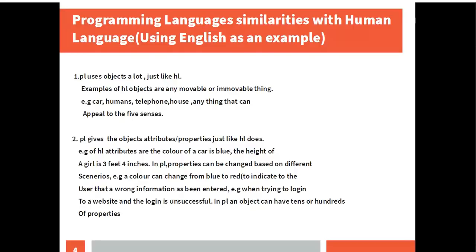car, humans, telephone, house — anything that can appeal to the five senses. The second point is that PL gives objects attributes or properties, just like HL does. Examples of HL attributes are: the color of a car is blue, the height of a girl is three feet four inches. In PL, properties can be changed based on different scenarios, e.g., a color can change from blue to red to indicate to the user that wrong information has been entered.